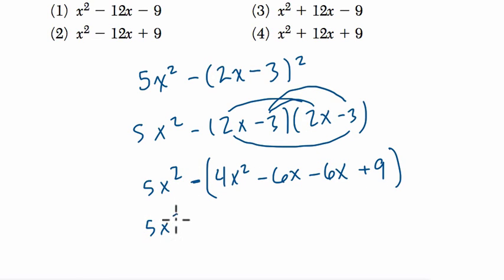So it's 5x squared. We're subtracting 4x squared. We're subtracting a negative. This is negative 12x, so we're subtracting negative 12x, which is plus 12x. And then subtracting 9.